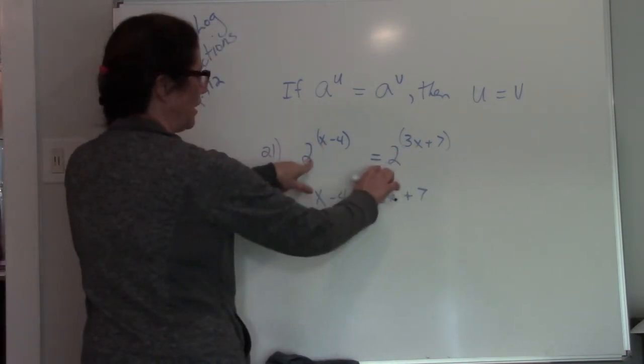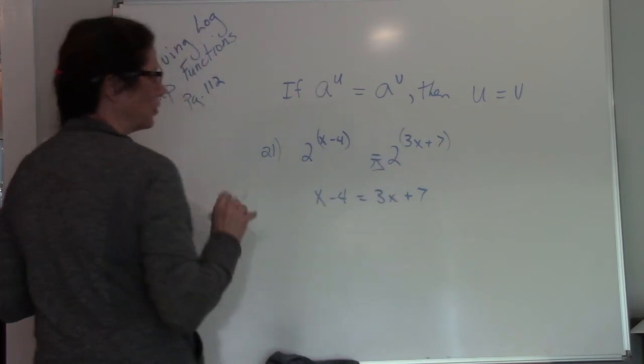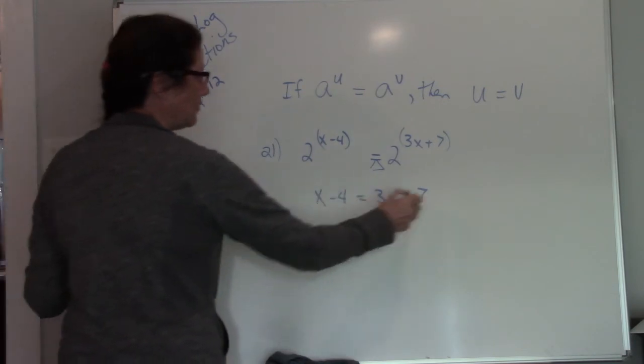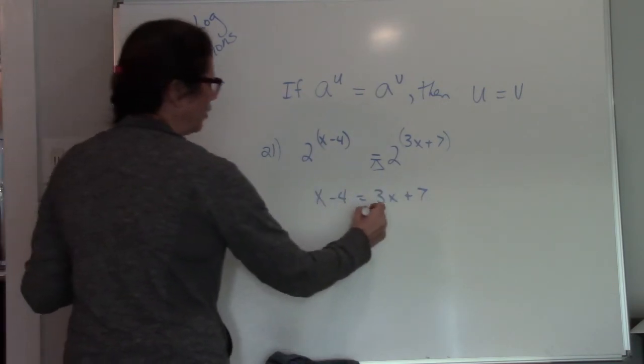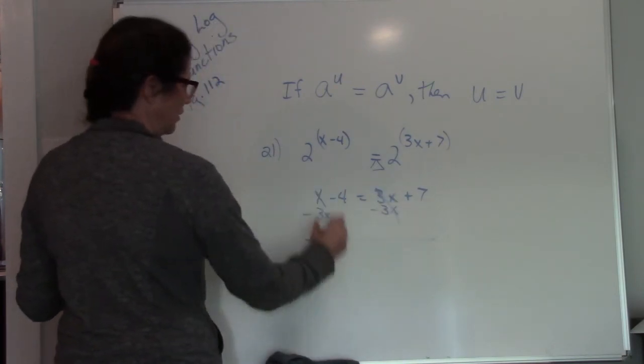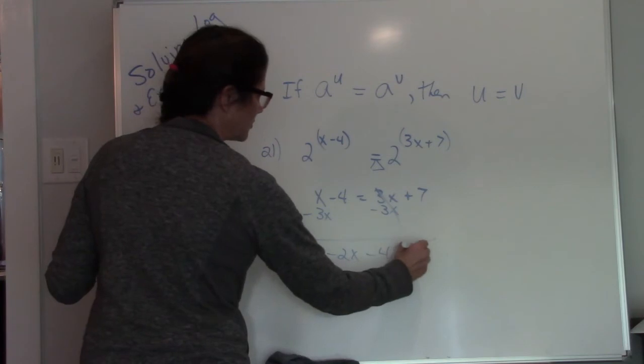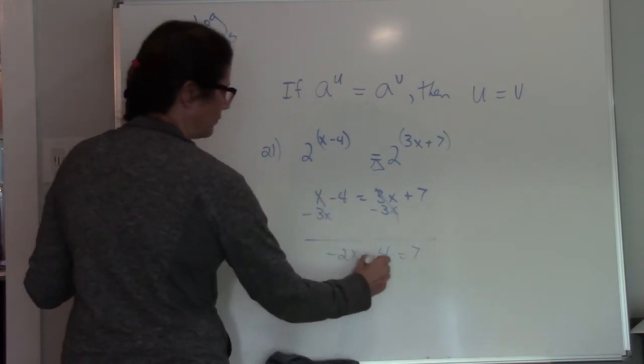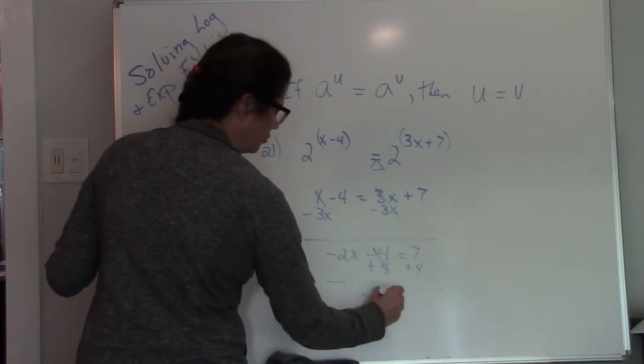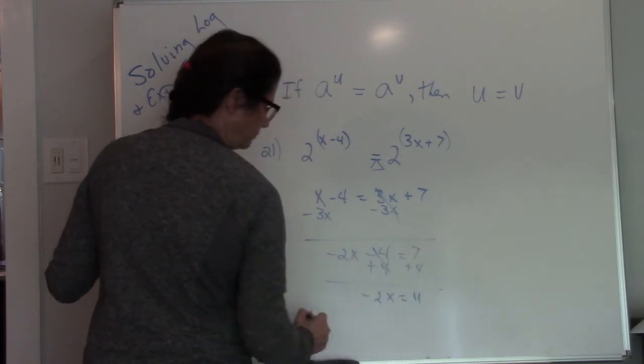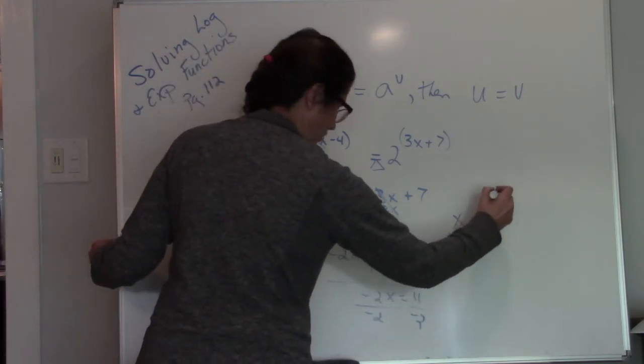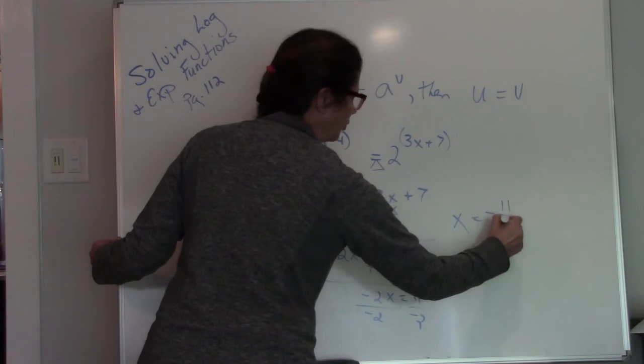Otherwise, this is no longer balanced, right? And remember, our equal sign is our balance. It has to be the same on both sides. So now I just have a straight equation. I'm going to get all my x's to one side. That cancels there. I end up with negative 2x minus 4 equals 7. Now I have a two-step equation. I'm going to push my 4 to the other side. Negative 2x equals 11. Divide both sides by negative 2. So my x value is negative 11 over 2.